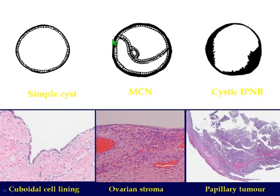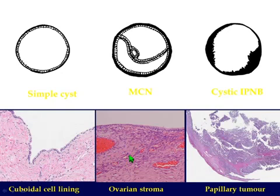Back to pathology — this is mucinous cystic neoplasm. Tumor cells line the cysts, and there is tumorous tissue in the septa. This is a cystin cyst, and this is covered by thick ovarian stroma, as you see here. But in the cystic variant of IPMN, this part is in fact a papillary tumor — covered by capsules, but without ovarian stroma.